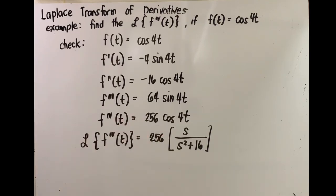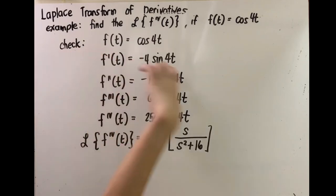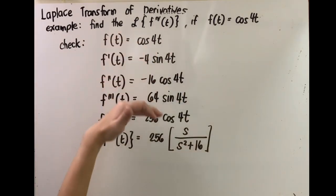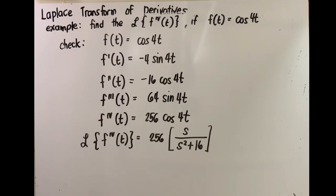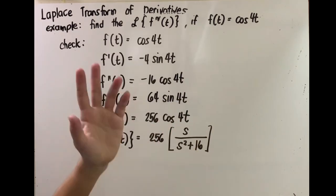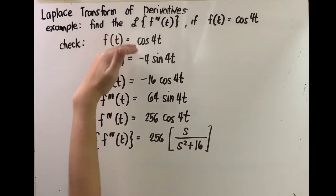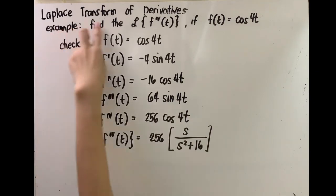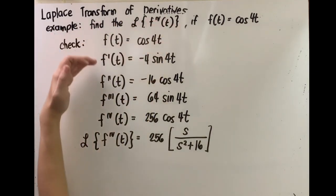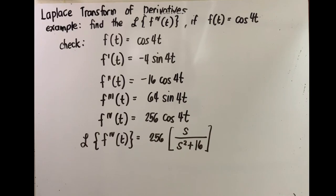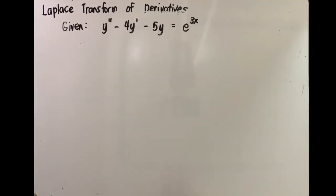You might wonder why we used the longer method via the Laplace transform of derivatives. With differential equations, we are not always given f of t explicitly. For example: y double prime minus 3y prime equals e raised to 4x. We showed this to confirm that the Laplace transform of derivatives formula arrives at the same answer, so let me show you a transformation of a differential equation.